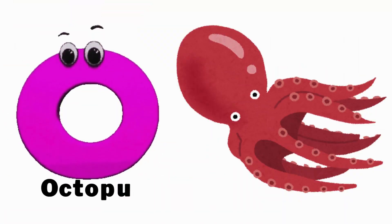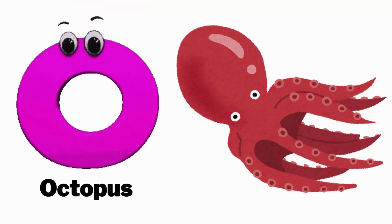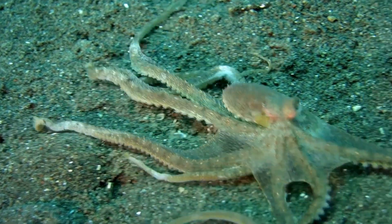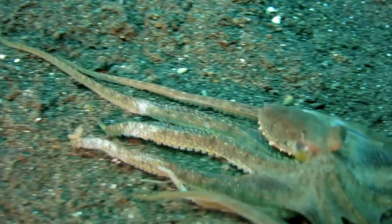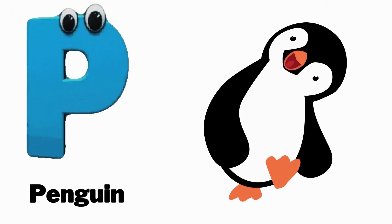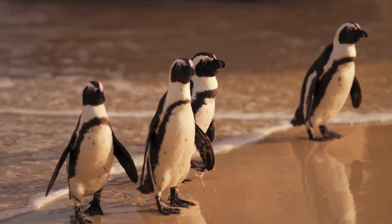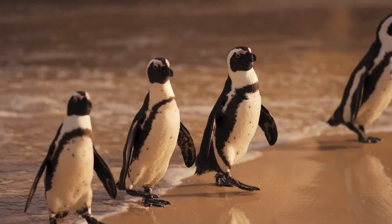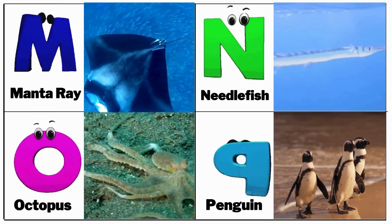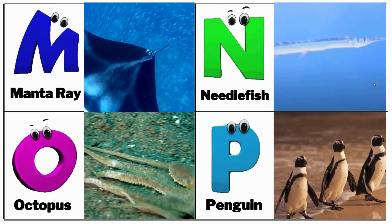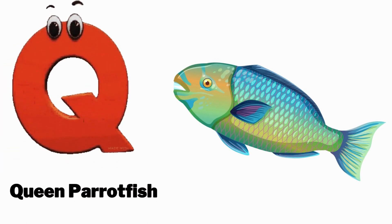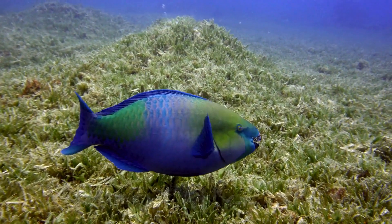O is for octopus. P is for penguin. Q is for queen parrotfish.